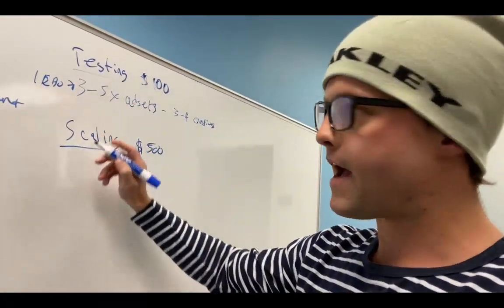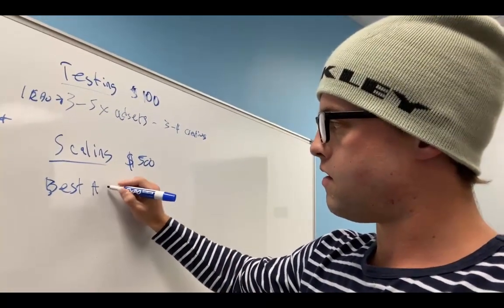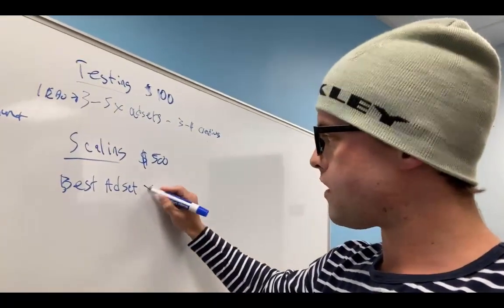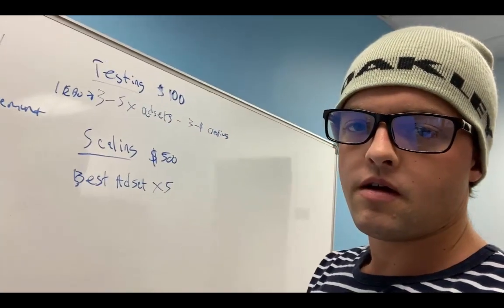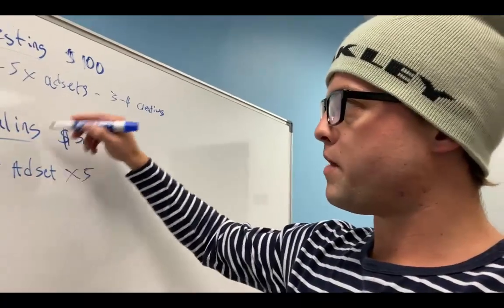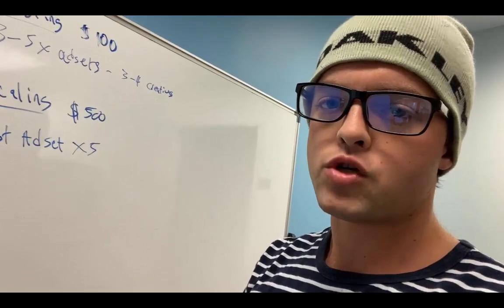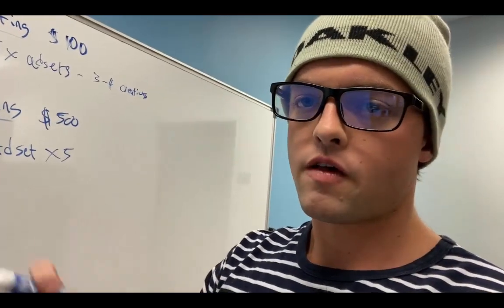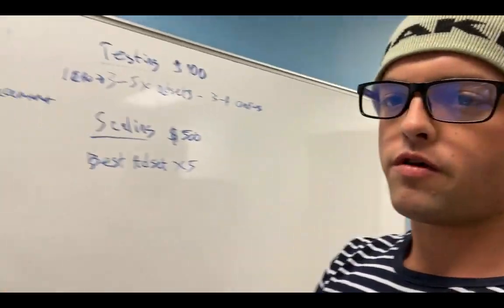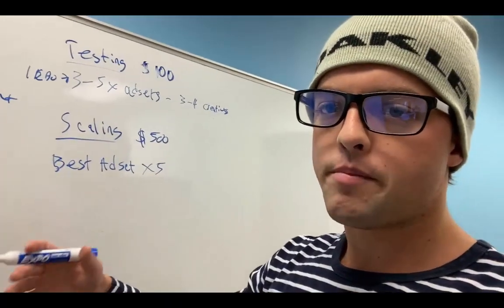We're going to take whatever the best ad set was from our testing campaign and duplicate it five times across the scaling campaign. So whatever that best ad set was — say you're targeting men between the ages of 20 to 40 who converted on a specific image or ad copy — take that top winning ad set and put it in its own CBO campaign with five exact copies, put about a $500 a day budget on the campaign level, and let it run for about three days. From there, kill off any duplicates that are not converting and leave anything that is running.